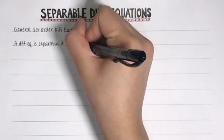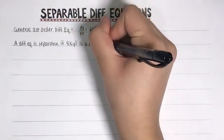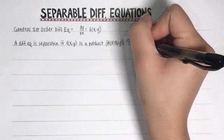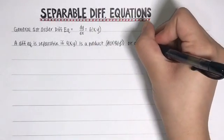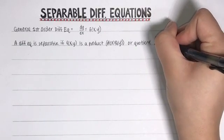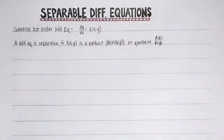A separable differential equation is when that function of x and y is a product or quotient of functions. A product of functions would be a of x times b of y, and a quotient of functions would be a of x over b of y. A of x and b of y are just two different functions. A of x depends on x and b of y depends on y.